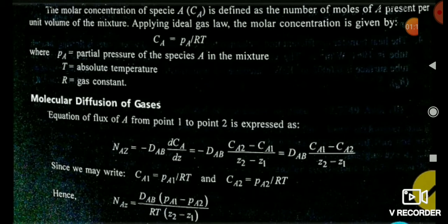One more thing: D_AB means the diffusivity or diffusion coefficient of gas A. For gas B, it is: N_Bz = D_BA × (C_B1 − C_B2) / (Z1 − Z2) = D_BA × (P_B1 − P_B2) / (RT × (Z1 − Z2)). In the case of gas B, we consider only the pressure and concentration of gas B at initial and final conditions.